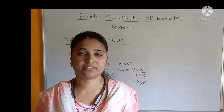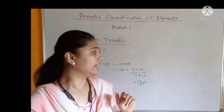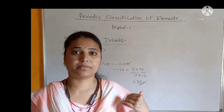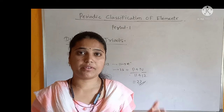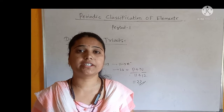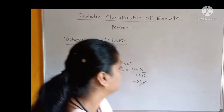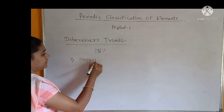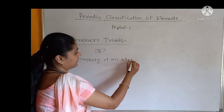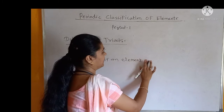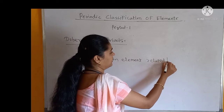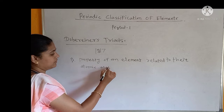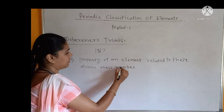At that time only a few elements were discovered, and their atomic mass numbers were known. Dobereiner's first postulate is that the property of an element is directly related to its atomic mass number. This is the first postulate of Dobereiner's Triads.